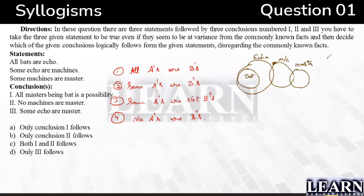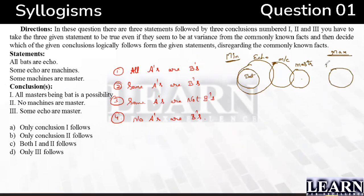For 'some machines are masters,' we just connect machine and master without extra connections. This is the minimum condition. Now check conclusion 1: 'all masters being bat is a possibility.' They are talking about a possibility, not a direct conclusion. In the minimum condition it is not possible, so we also draw the maximum condition. In the maximum condition, can all masters be bat? Yes! So conclusion 1 follows as a possibility.